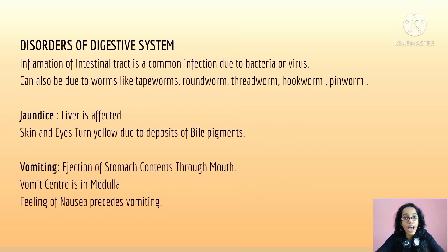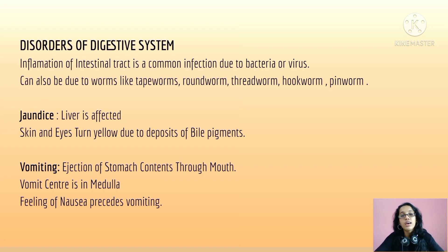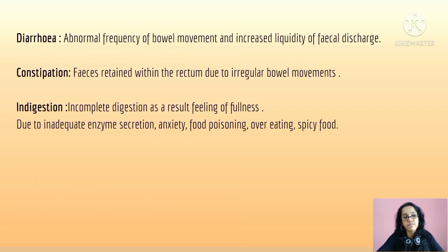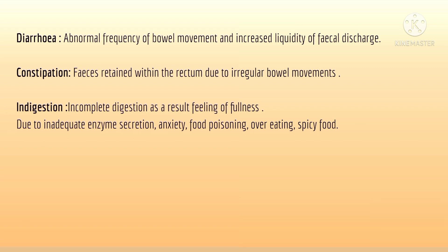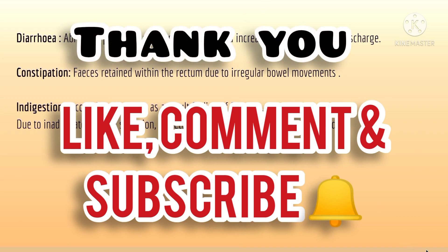Disorders of the digestive system include: inflammation of the intestinal tract, a common infection due to bacteria, viruses, or worms such as tapeworms, roundworms, threadworms, hookworms, or pinworms. Jaundice affects the liver, and the skin and eyes turn yellow due to deposition of bile pigments. Vomiting is the ejection of stomach contents through the mouth; the vomit center is in the medulla, and nausea precedes vomiting. Diarrhea is abnormal frequency and increased liquidity of fecal discharge. Constipation is fecal retention in the rectum due to irregular bowel movements. Indigestion is a feeling of fullness due to incomplete digestion, caused by inadequate enzyme secretion, anxiety, food poisoning, or overeating spicy foods.